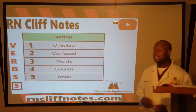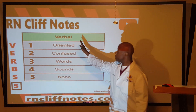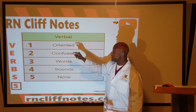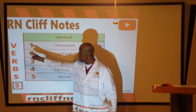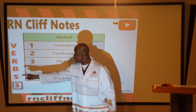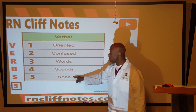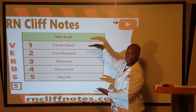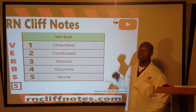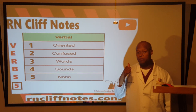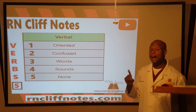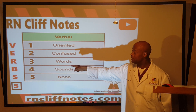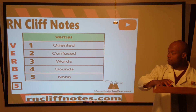Moving on to verbal ability. Instead of 'verbal ability,' we simply make it 'verbs.' If we count the letters in V-E-R-B-S — one, two, three, four, five — that gives us the maximum range for a person's GCS score within their verbal ability. So verbal ability ranges from one through five.